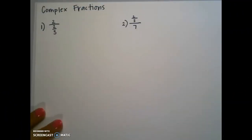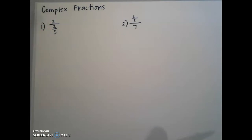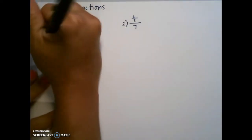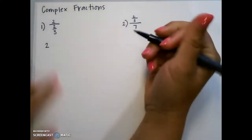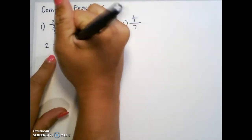Let's take a look at simplifying complex fractions. A complex fraction is just a fraction on top of another fraction. The way that we simplify these is to simply divide. So here we would do 2 divided by 2 thirds.